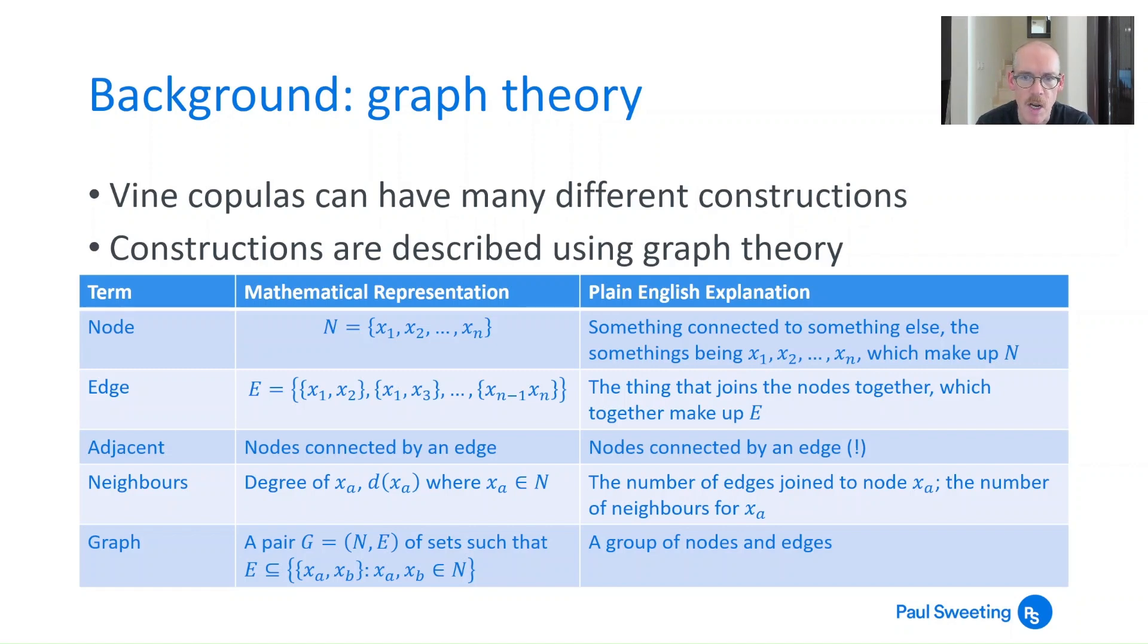The first thing is a node which is just something which can be connected to something else. There's some things being x1, x2 all the way up to xn and these make the node set N. And what is it that connects the various nodes together? Well that's known as an edge. The thing that joins nodes together and together all these edges make up the set E. The edge set is made up of pairs, so x1, x2 is the first pair, x1, x3 is the second pair and so on. The edge set is defined in terms of the nodes that the edge connects.